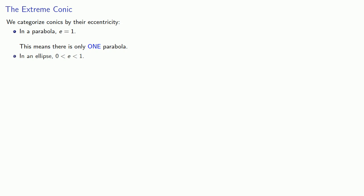For an ellipse, the eccentricity is between 0 and 1. And this means there are different types of ellipses, but we can graph them by finding the endpoints of the major and minor axes.